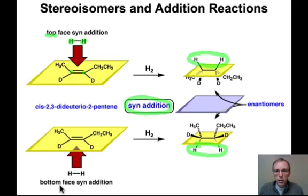What's the result? The result is that we have created two new stereocenters in doing the addition reaction. The products that we've obtained by top face and bottom face addition are related to each other as enantiomers.